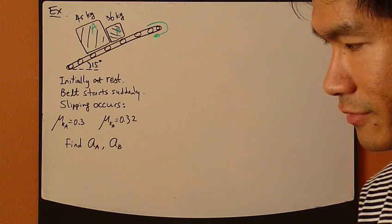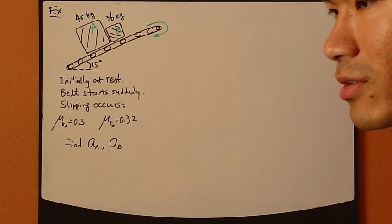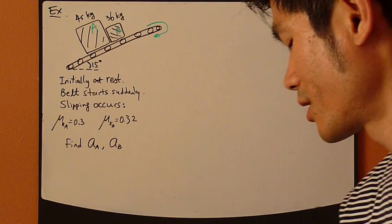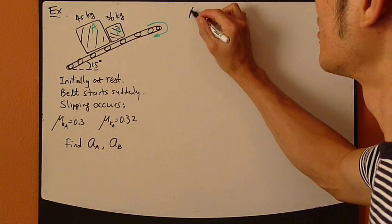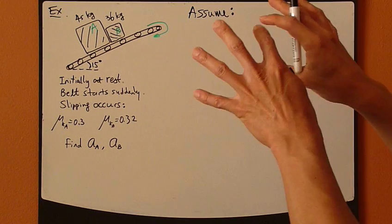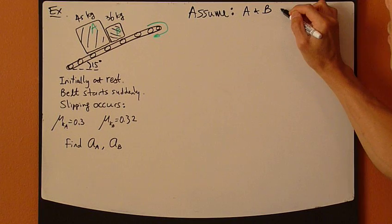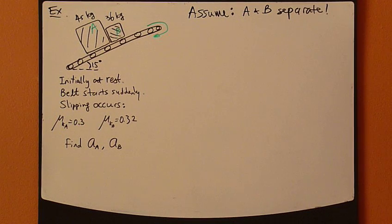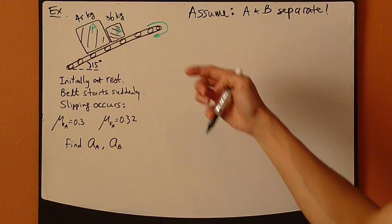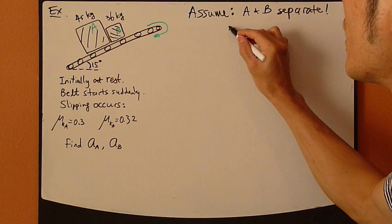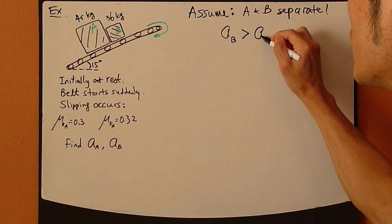The beauty of engineering analysis is that if you don't know something, assume something. So here's what I'm going to assume. Make assumptions. I'm going to assume that they separate. They separate, and not only that they separate, I'm going to also assume that acceleration of B is greater than acceleration of A.